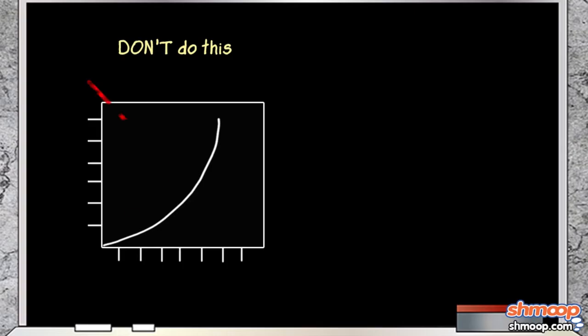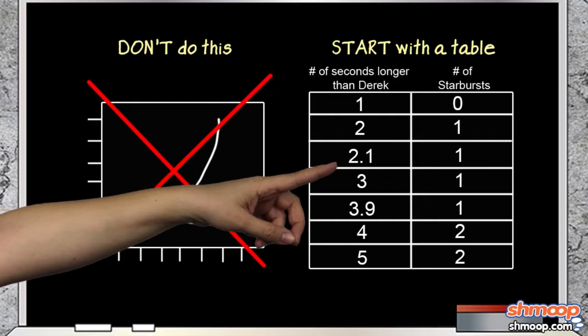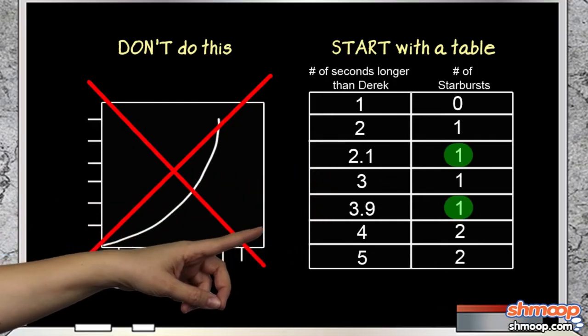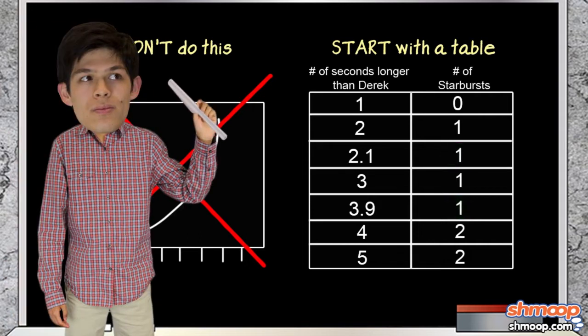We can't plot a line with a slope, because the number doesn't go up constantly. For instance, if you stand 2.1 seconds longer than Derek, or you stand 3.9 seconds longer than Derek, you'll still get only one Starburst. Derek doesn't have a sharp enough knife to cut the candies in pieces, so you can only receive a whole number amount of Starbursts.